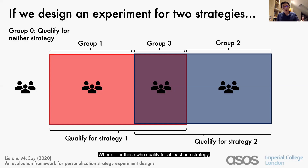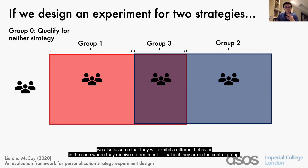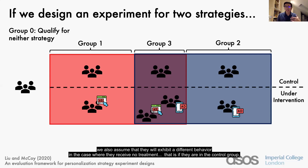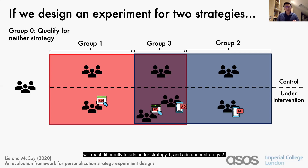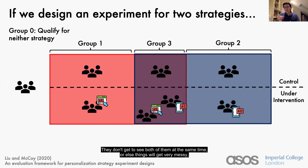For those who qualify for at least one strategy, we assume they will exhibit different behavior in the case where they receive no treatment — that is, if they're in the control group — versus when they receive some treatment, such as advertisements, under the respective strategies. It's also worth noting that people in the middle group, those who qualify for both strategies at the same time, will react differently to ads under strategy one versus ads under strategy two. They don't get to see both at the same time, as that would get very messy. This results in eight different behaviors for an experiment involving two strategies.